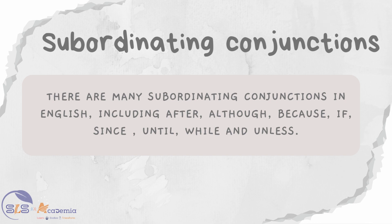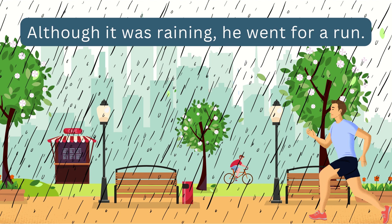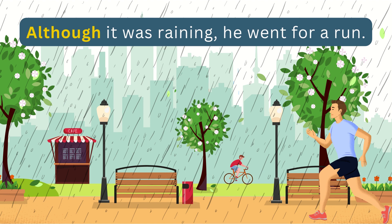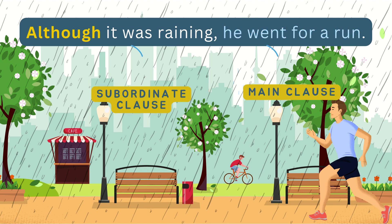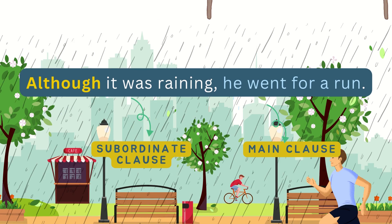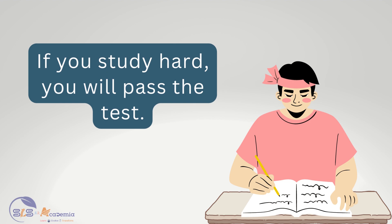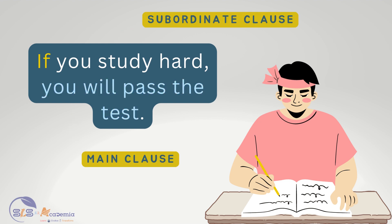Let us see some examples where subordinating conjunctions are used. Example: Although it was raining, he went for a run. The subordinating conjunction "although" joins the subordinate clause "although it was raining" to the main clause "he went for a run," indicating a contrast. The subordinate clause depends on the main clause for its meaning, while the main clause can stand alone. Another example: If you study hard, you will pass the test. Here, "if" indicates a conditional relationship between the two clauses.